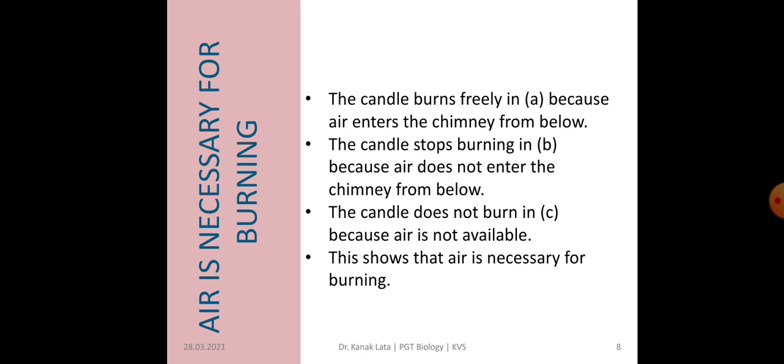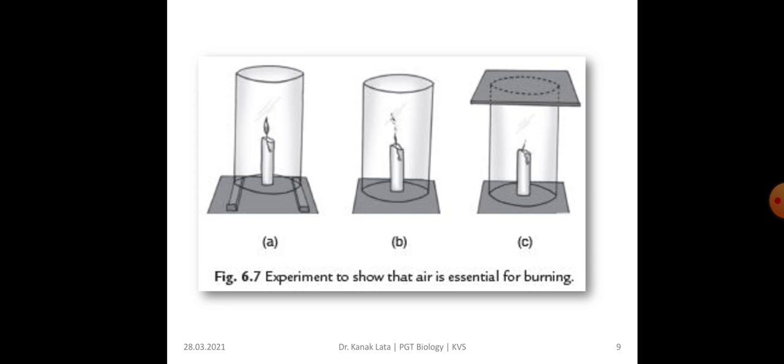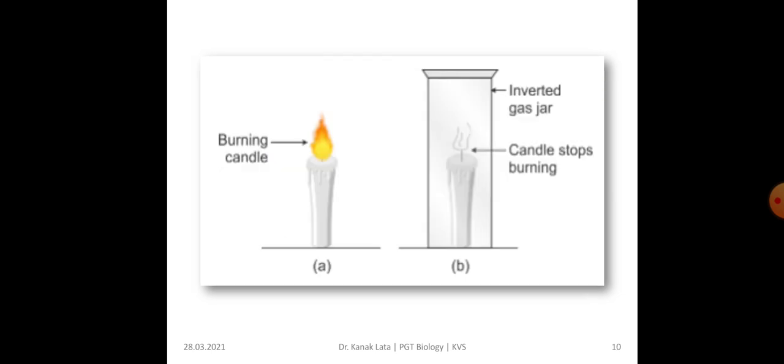This activity shows that air is necessary for burning. In the first case, the chimney is slightly raised with wooden blocks so the candle is burning. In the second case, the chimney is closed at the bottom, so the flame is extinguished. In the third case, the candle also does not burn. Here the figure shows the burning candle, and the candle stops burning whenever an inverted glass jar is placed over it.